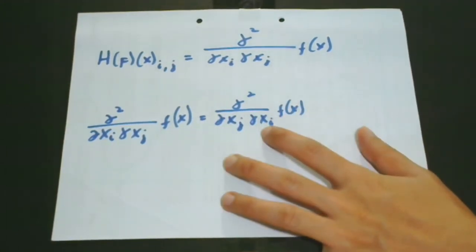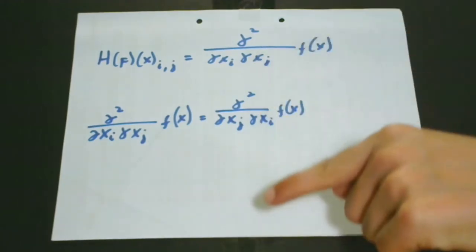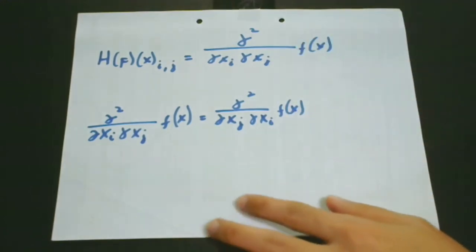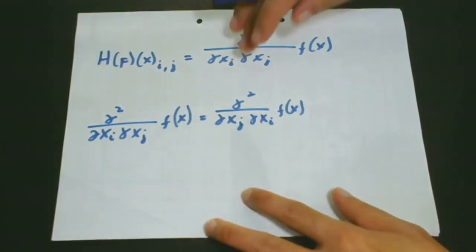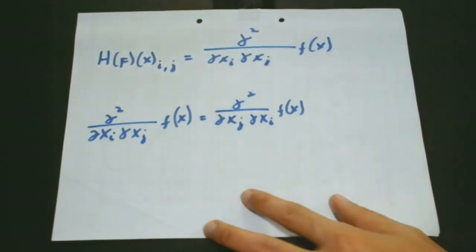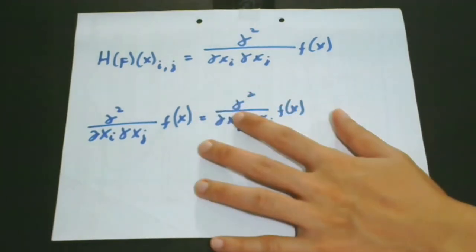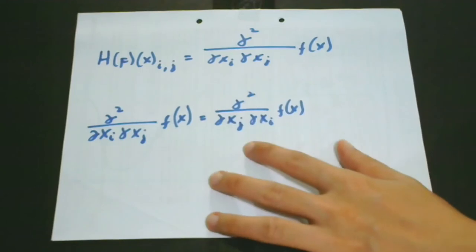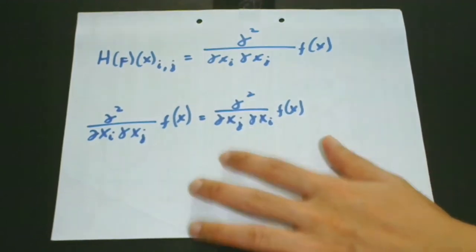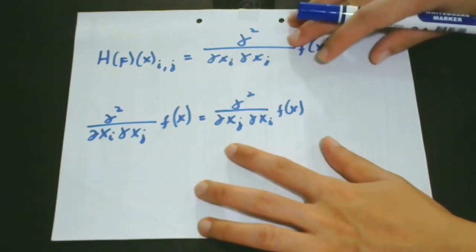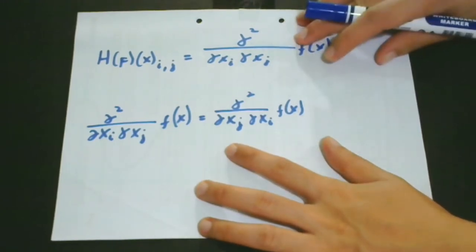We talked about the Jacobian matrix in our last lesson — the link is given in the description below. I suggest you study lesson number 19 for a better understanding of this lesson and our next few lessons. Based on this expression, we can say that the Hessian is the Jacobian of the gradient.